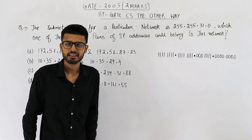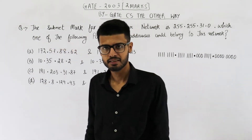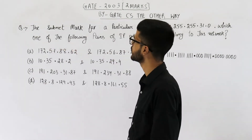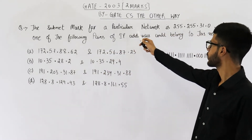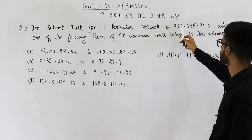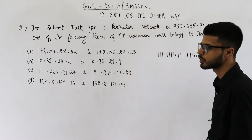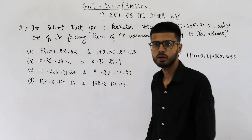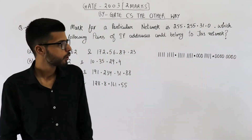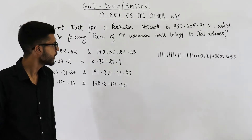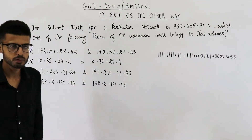Hello people! Welcome back. The question is from the Gate 2003 exam. This one is for two marks. They are saying the subnet mask for a particular network is 255.255.31.0. Which one of the following pairs of IP addresses could belong to this network?